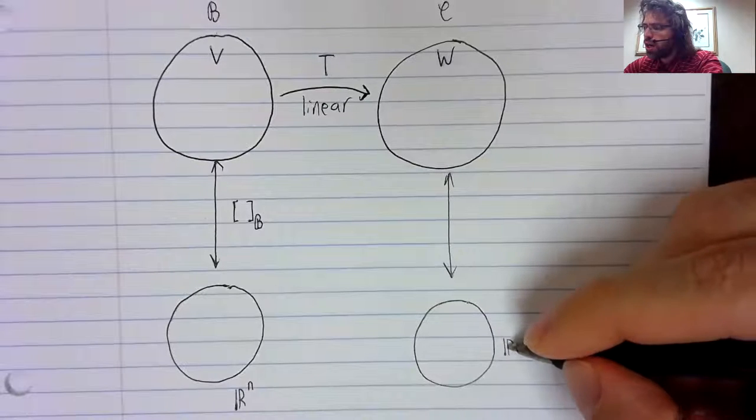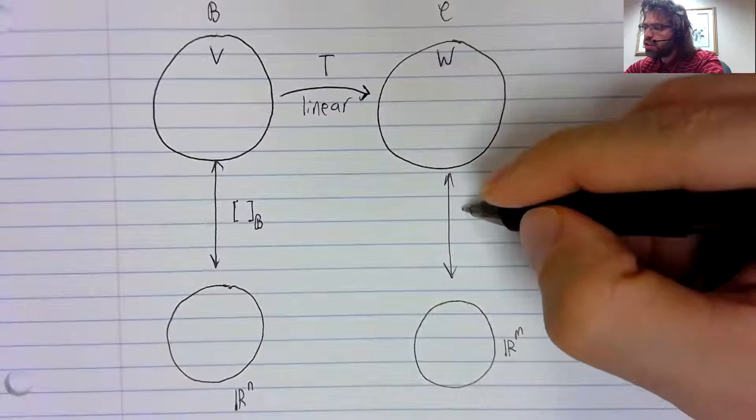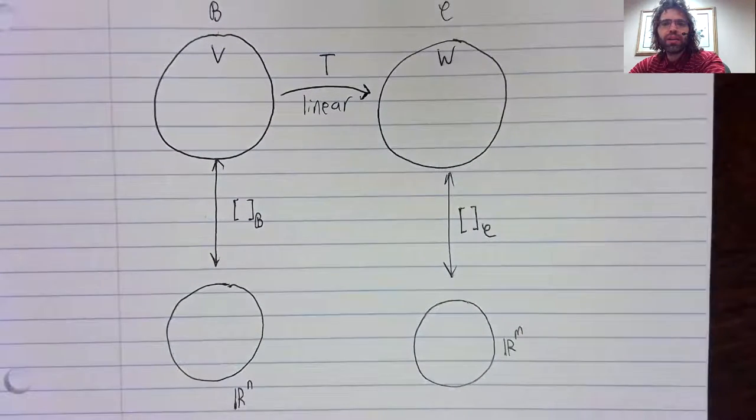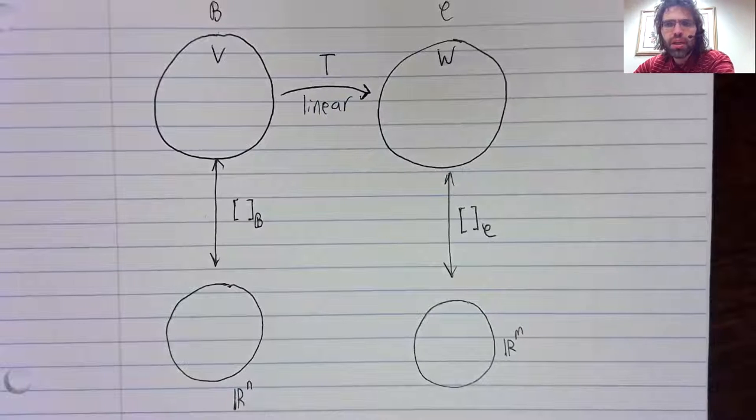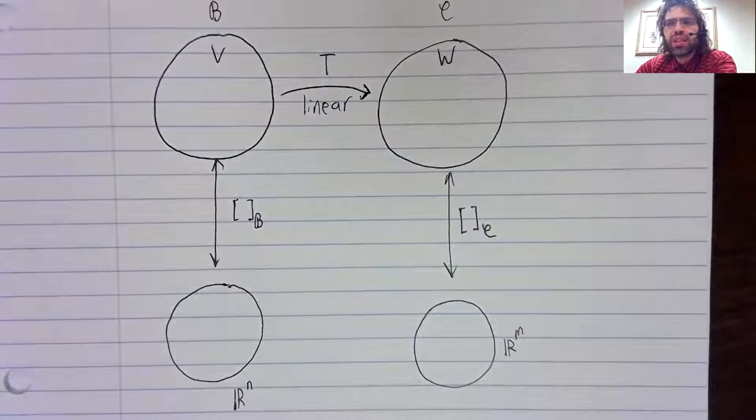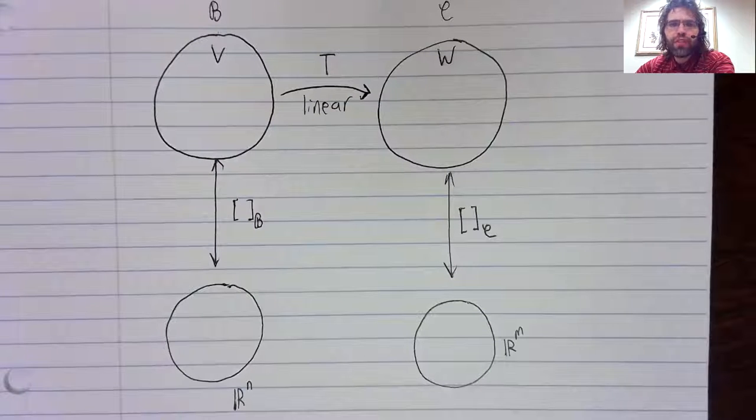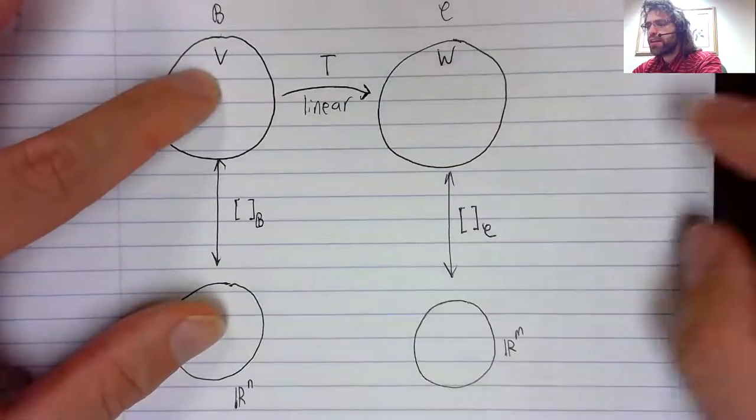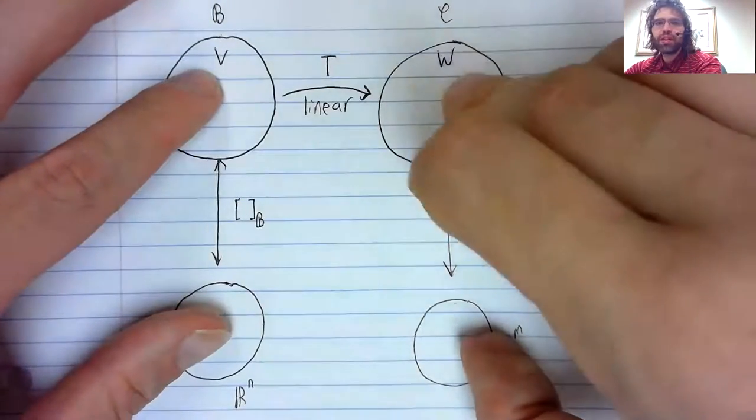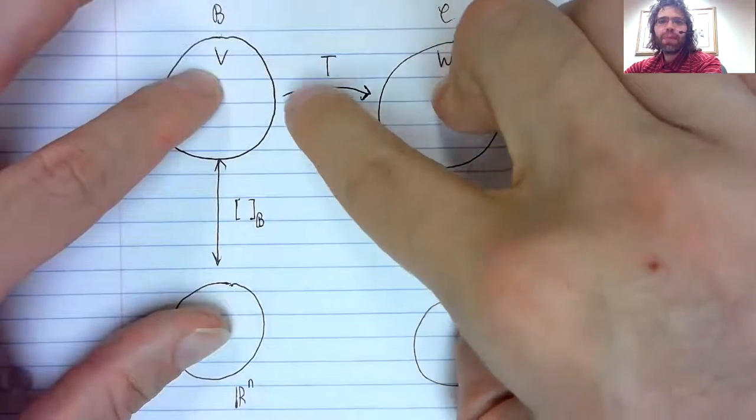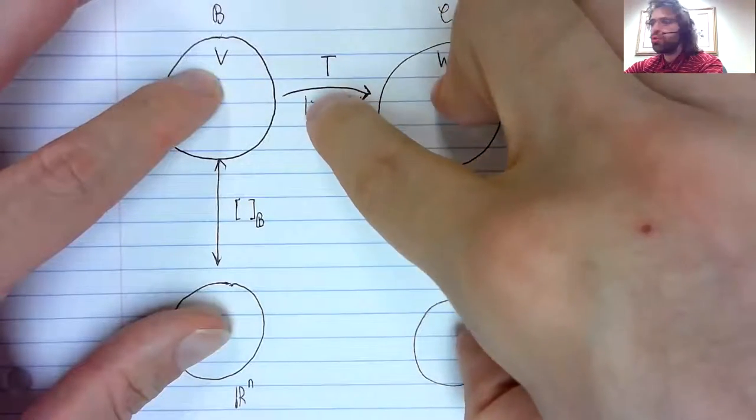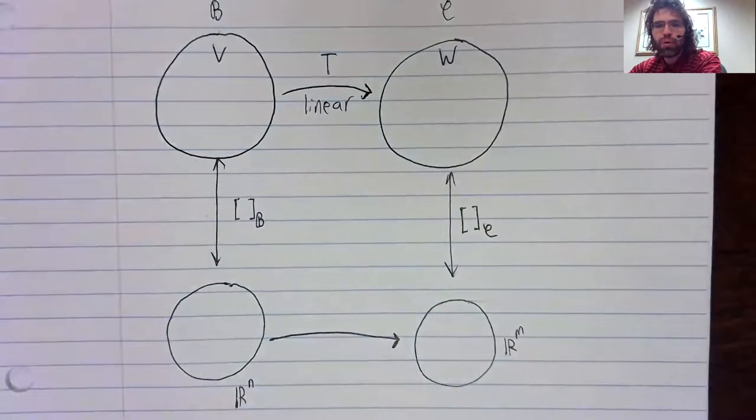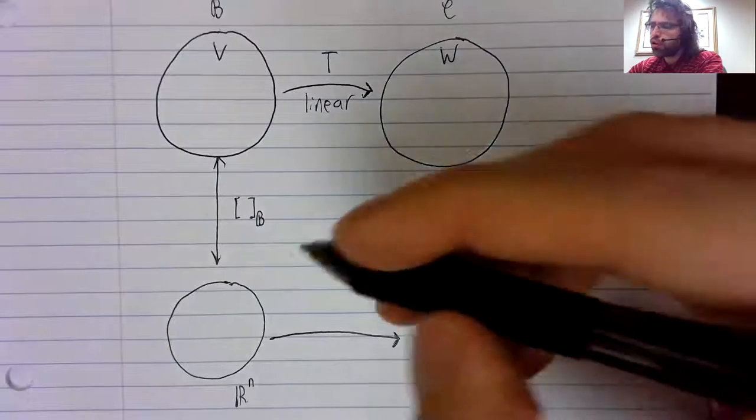Isomorphic to R^m. And again, the reason it's isomorphic is that the coordinate mapping is an isomorphism. Now, isomorphic spaces are identical from a vector space point of view. So if these two spaces are identical, and these two spaces are identical, and you have this mapping from V to W, there ought to be an identical mapping from R^n to R^m.